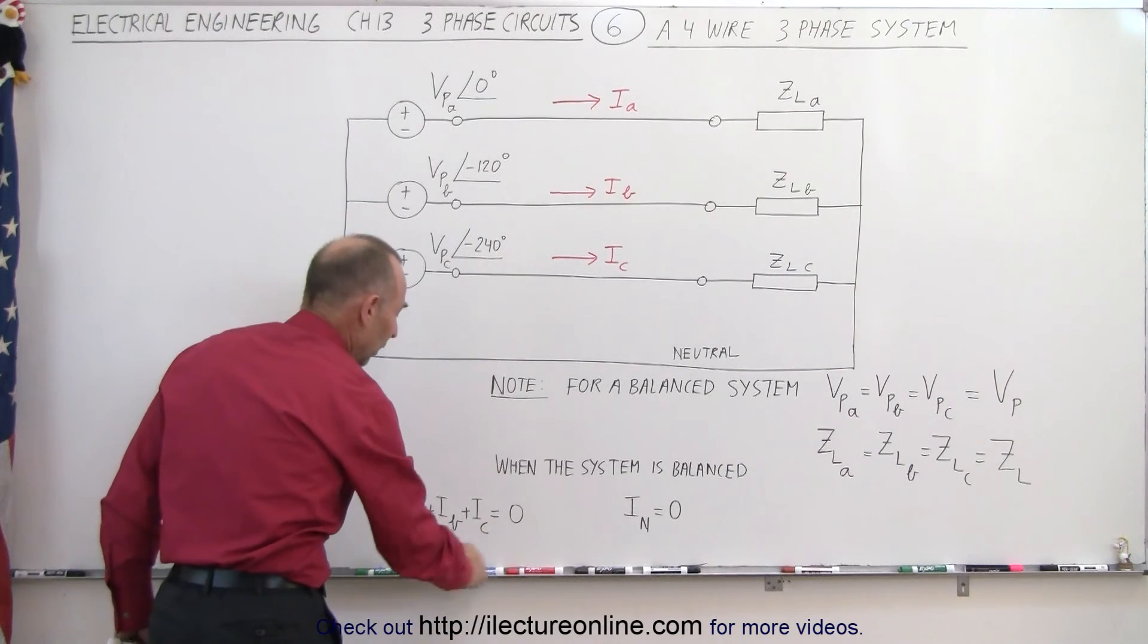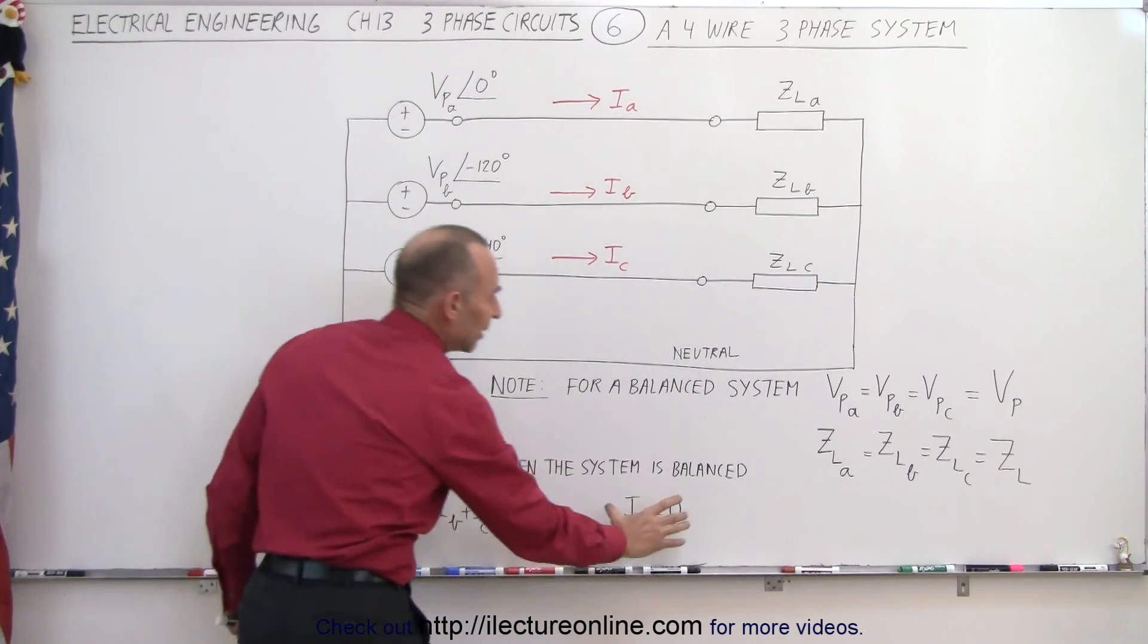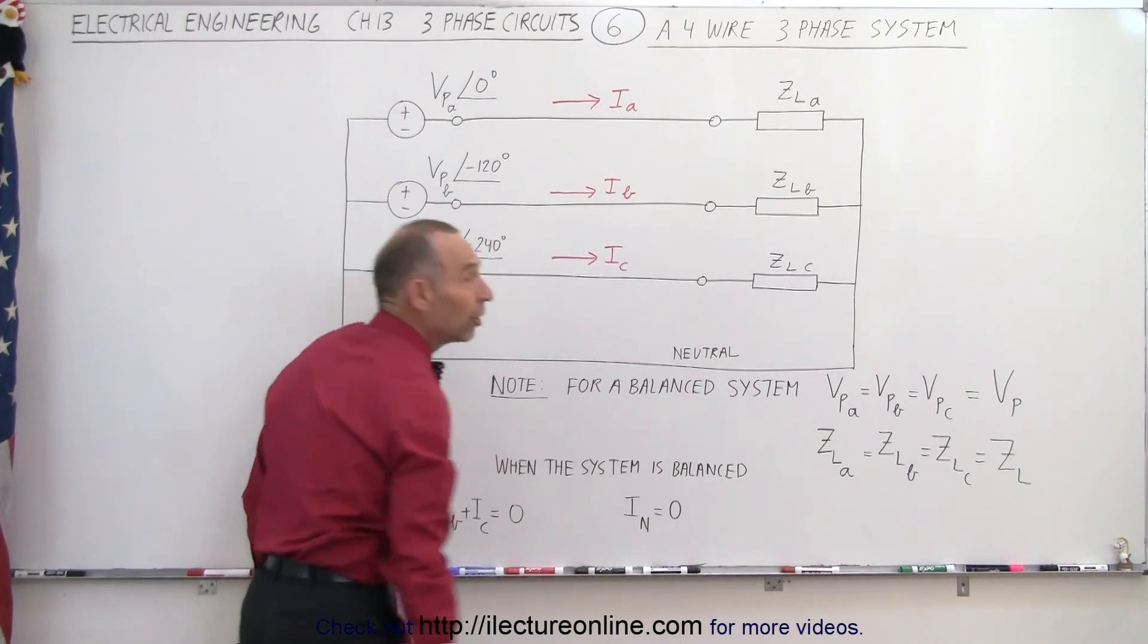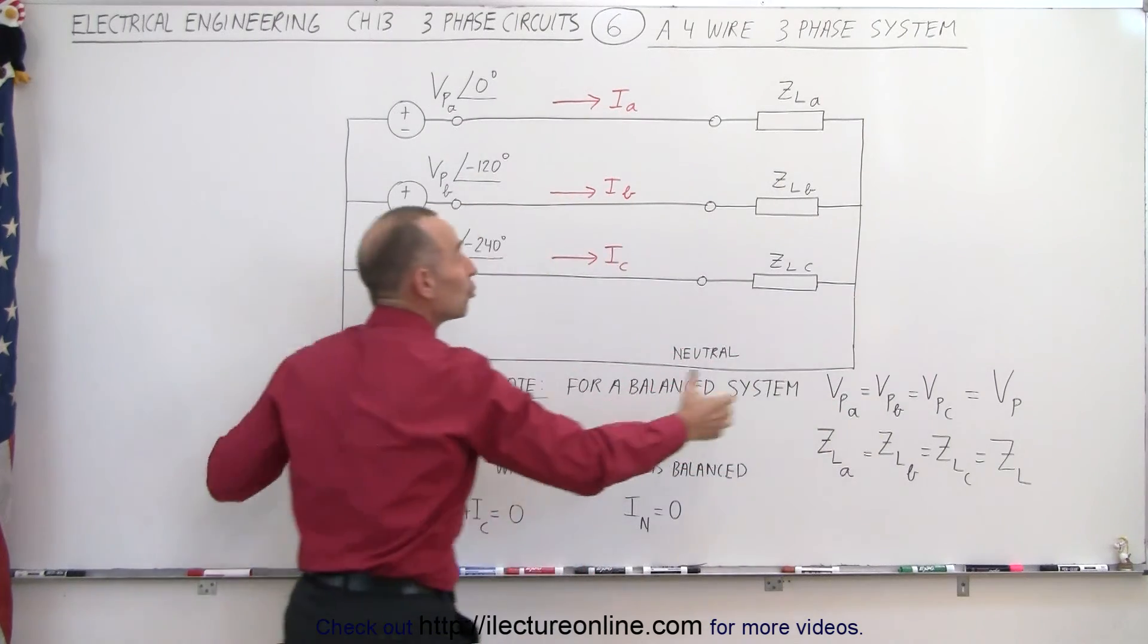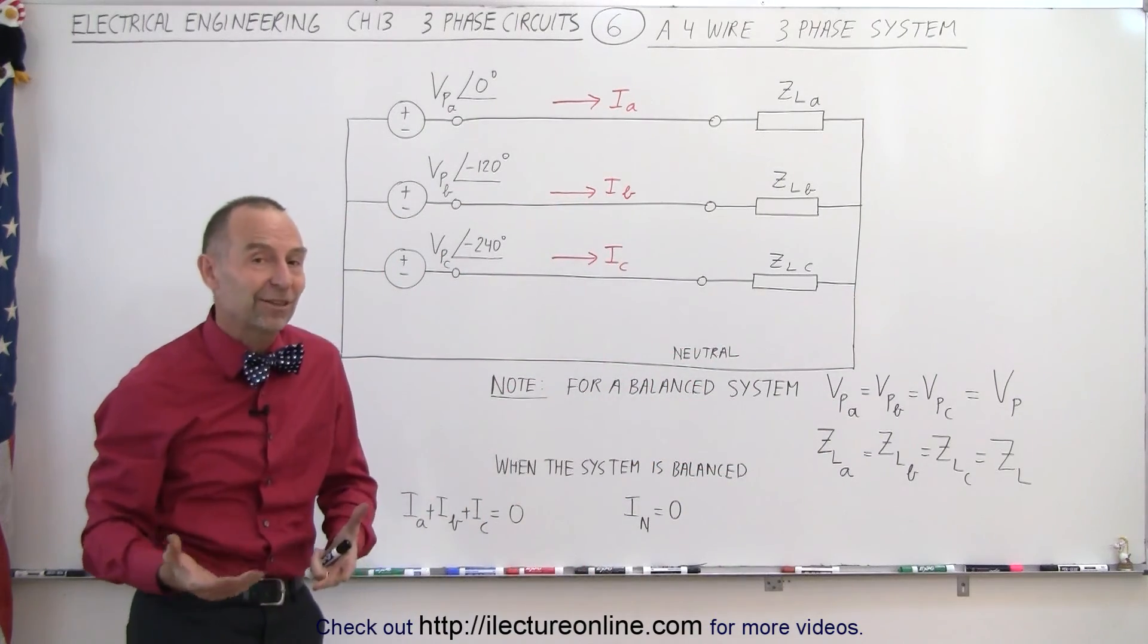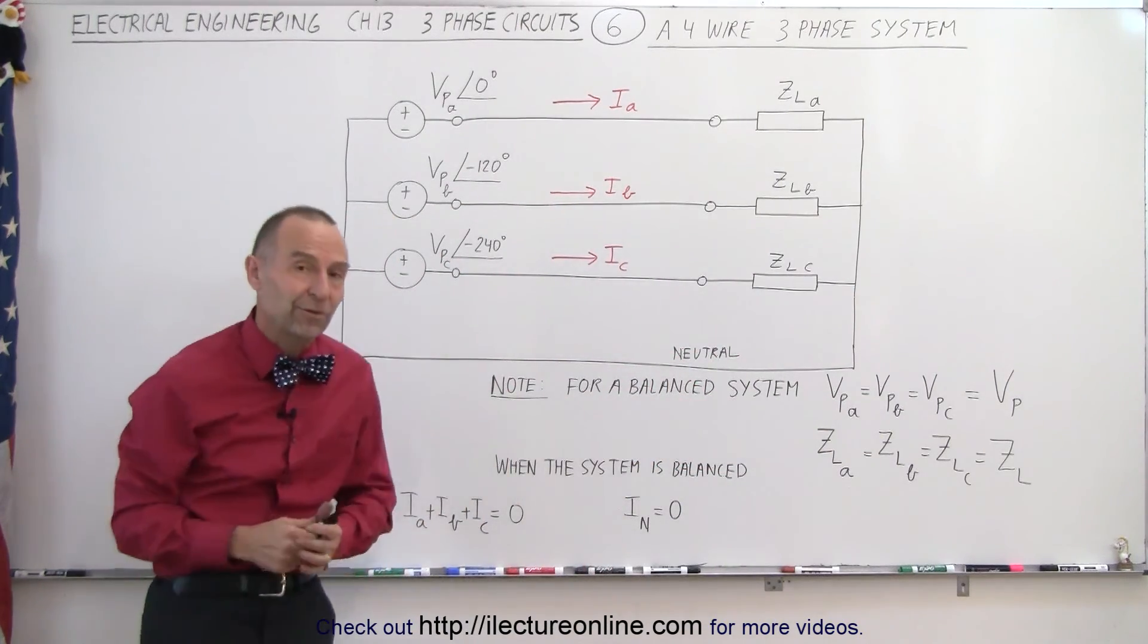and therefore the currents will all add up to zero, and therefore there's no current coming back on the neutral. And therefore, if there's no current on the neutral, we can simply detach the neutral, and it should not make any difference on the system if the system is perfectly balanced.